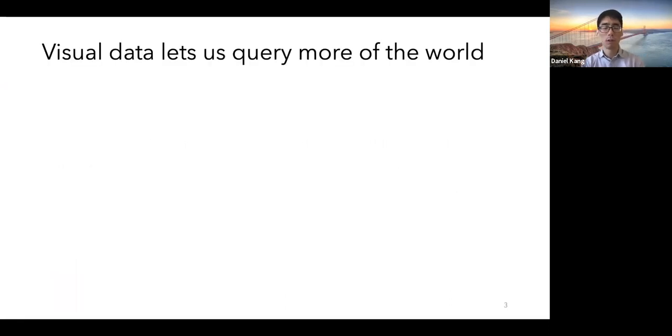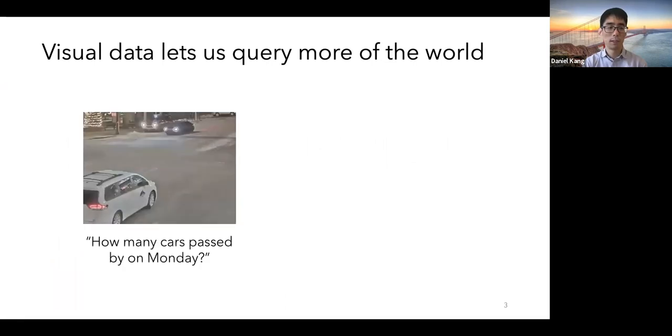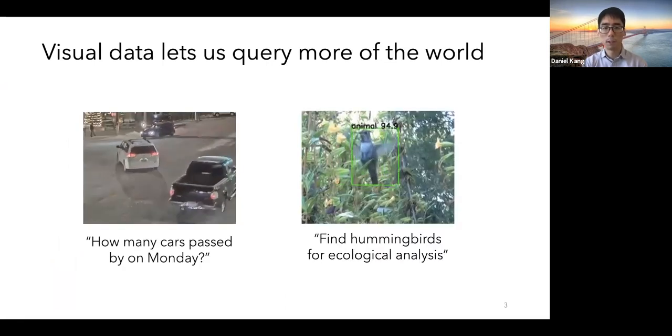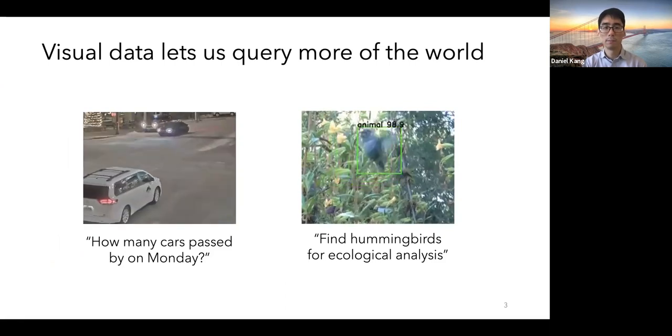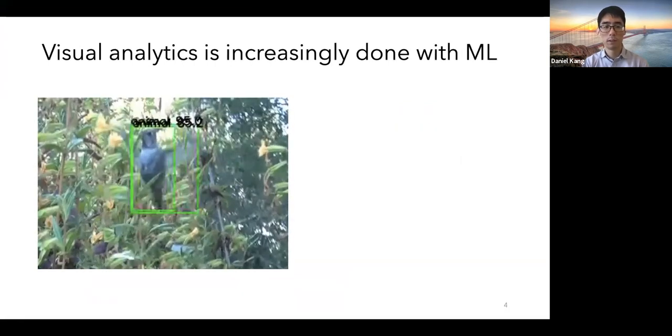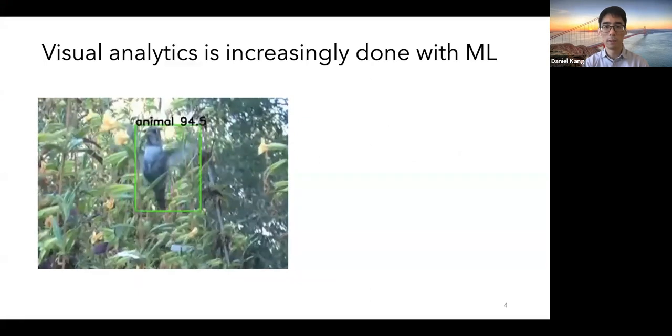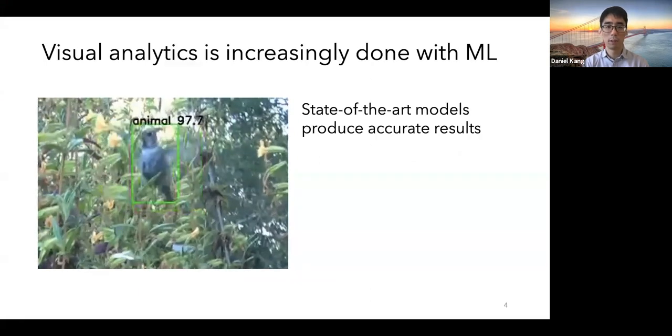Visual data lets us query more of the world. For example, analysts can answer queries of the form how many cars pass by one day, or find hummingbirds for ecological analysis. Visual analytics is increasingly done with machine learning, in particular with accurate, state-of-the-art deep neural networks, which can produce accurate results. For example, we're finding hummingbirds here.